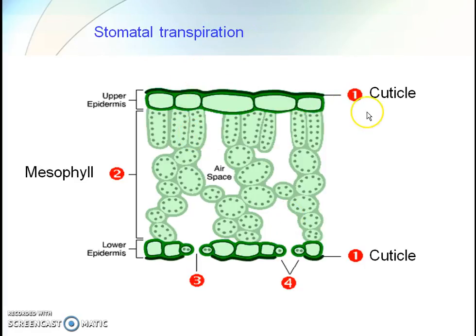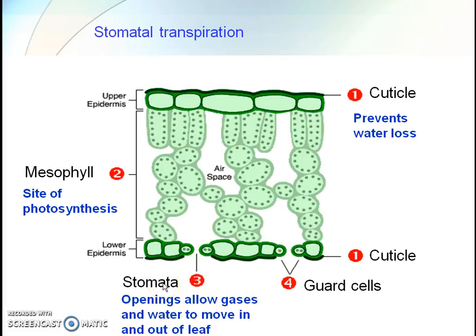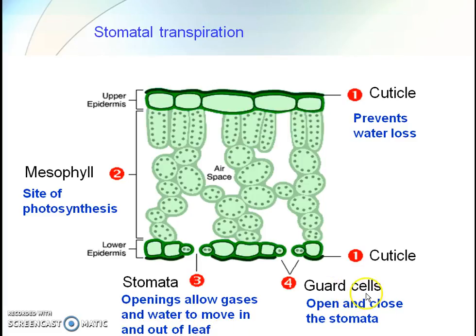The internal structure of the leaf shows the upper and lower epidermis, with the upper epidermis below the cuticle. Mesophyll cells are bottle-shaped and dark green in color. In the lower epidermis, stomata are present. These openings allow gases and water to move in and out of the leaf.